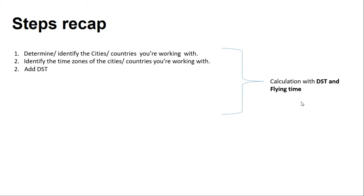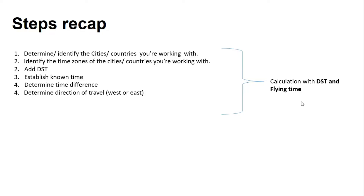We establish the known time by reading through the scenario. Step four is where we determine the time difference between the two countries. Then we proceed to check the direction of travel by reading the scenario to determine whether we are adding or subtracting.